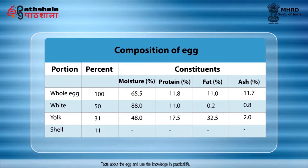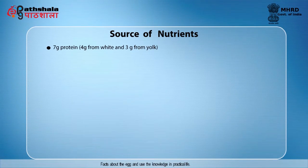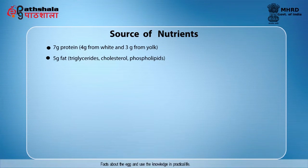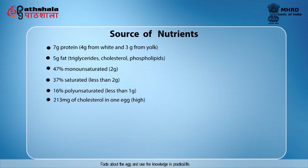To get a better picture, we will look into the composition of the egg. The egg contents comprise approximately 65% white and 35% yolk. The chief components of eggs are protein and lipids. It is a major source of 7g protein — 4g from white and 3g from yolk — 5g fat comprising triglycerides, cholesterol, and phospholipids: 47% monounsaturated fatty acids, 37% saturated fatty acids, and 16% polyunsaturated fatty acids. 213 mg of cholesterol is present in one egg, which is quite high.